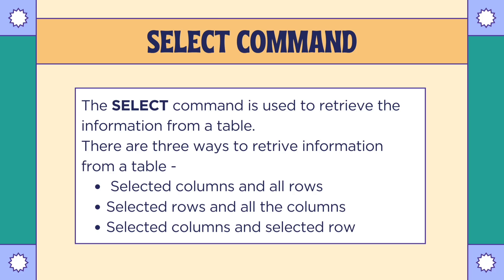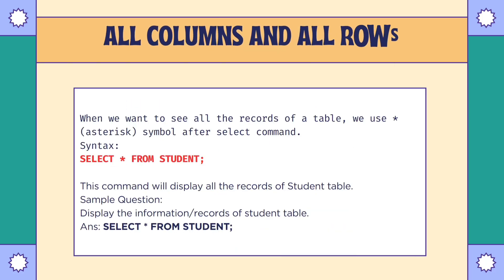Suppose I have a table with column names: roll number, name, class, and marks. If I want to see only name and marks of all students, the first option — selected columns and all rows — will be applied. If I want to see only class 10 students with all information, the second option applies. If I want only the name and marks of class 10 students, then selected columns and selected rows applies.